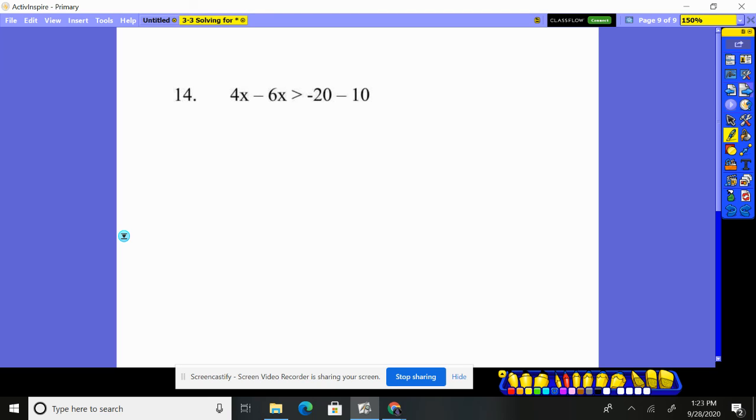And our final problem here. 4x - 2x, -2x, greater than -30. Divide by -2. Here's my x. Inequality must flip since we divided or multiplied by a negative. And we have x < 15 for the final problem.